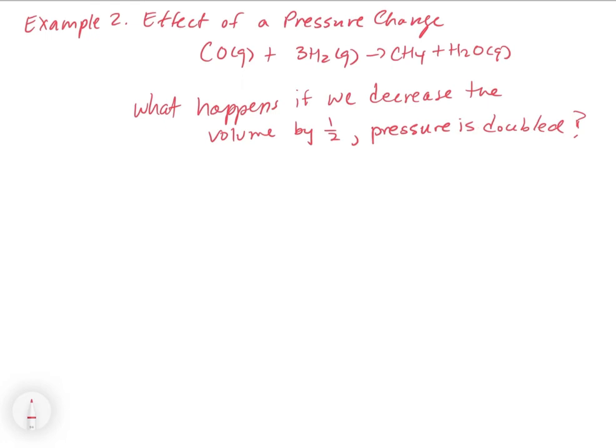Now let's look at how we can perturb an equilibrium involving gases by changing the pressure. If we have a mixture at equilibrium and we decrease the volume by half, we know from gas laws that that's going to double the pressure because they're inversely related. So in essence, we're doubling the pressure of each one of these components. The question becomes: what is that going to do to the equilibrium?